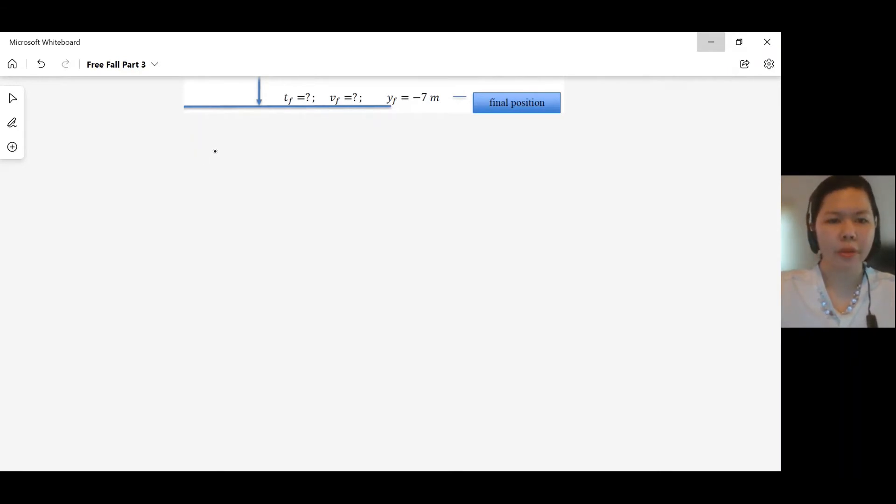So we have G times Tf minus T0 equals VF minus V0. This is our first freefall equation, equation 2.1.